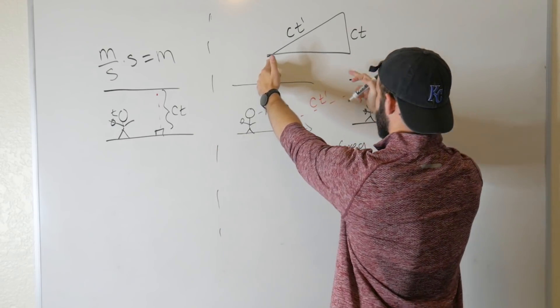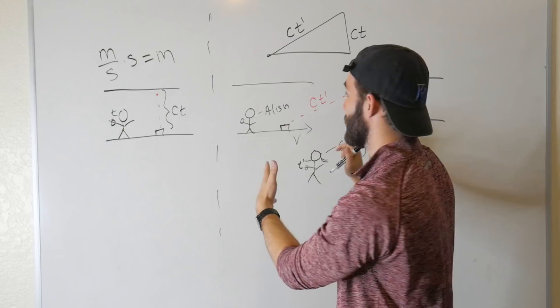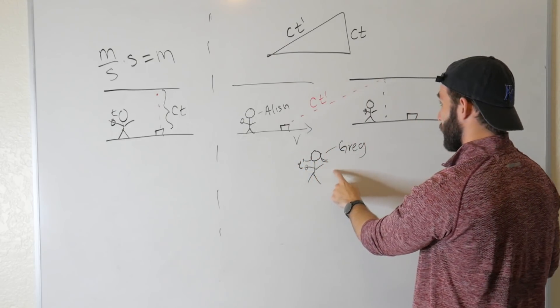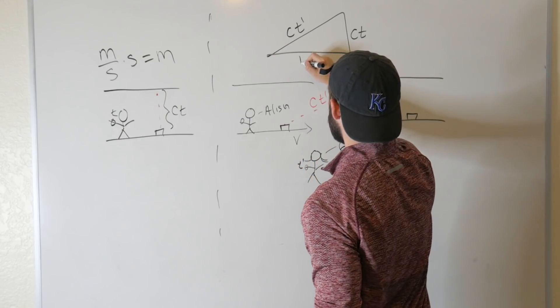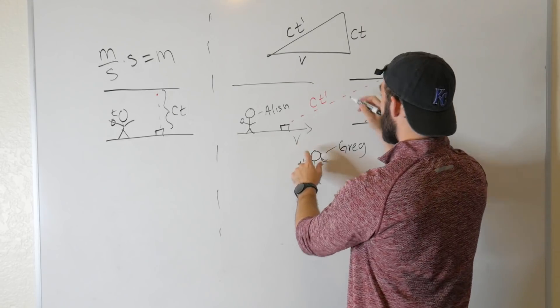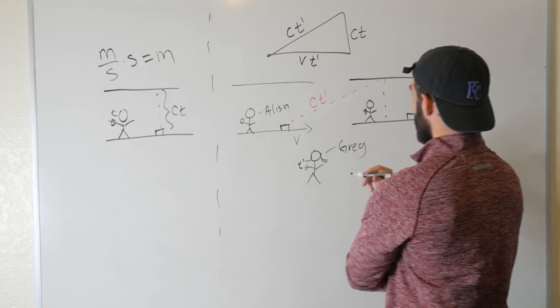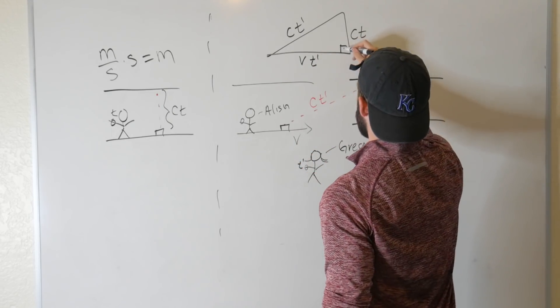And then the final distance is going to be how far the ship itself has traveled with respect to Greg's reference frame. So that's going to be some distance or some speed V T prime. And now we can just use the algorithm.